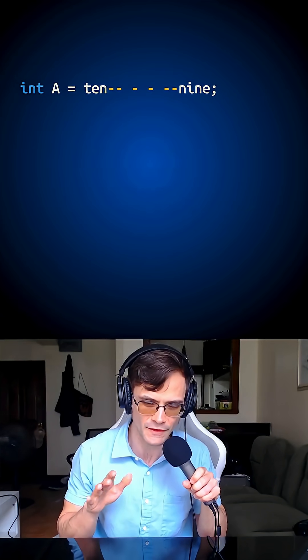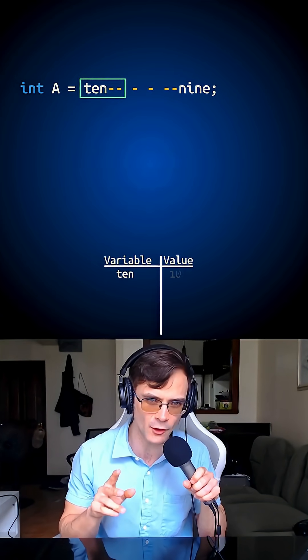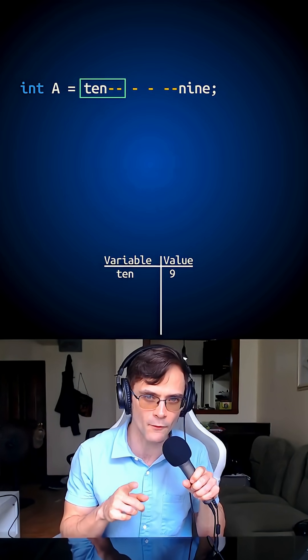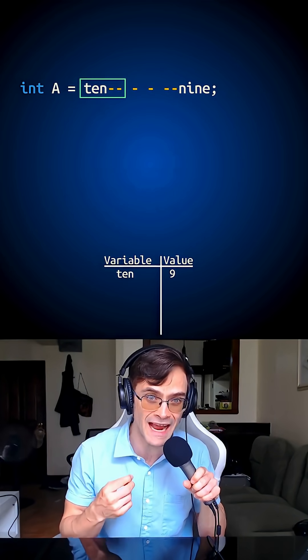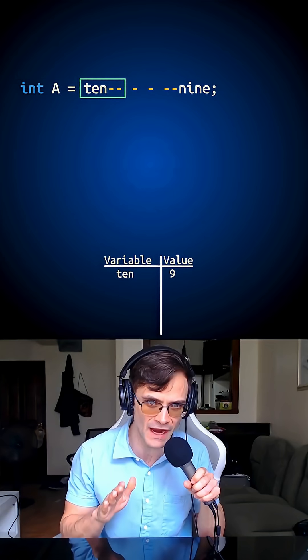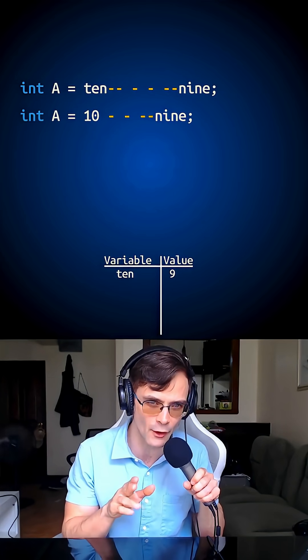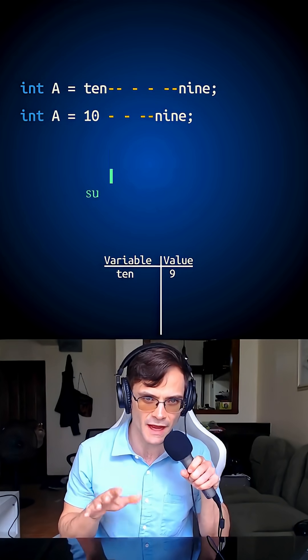We'll figure out this line first. So 10 minus minus will decrement the value of 10, but do I use the original value before I decrement or the value after I decrement when I do the math in this line? This is suffix decrement, so I actually use the original value to do the math.